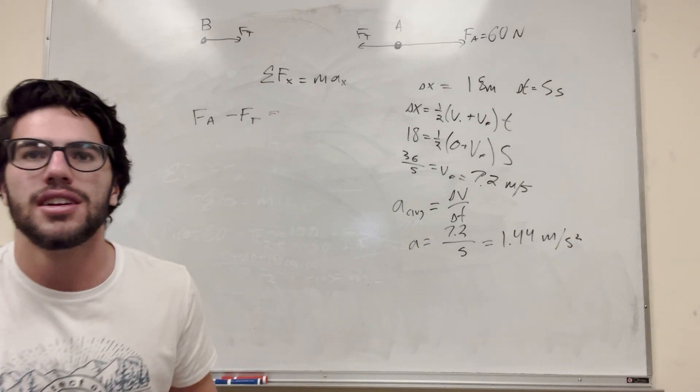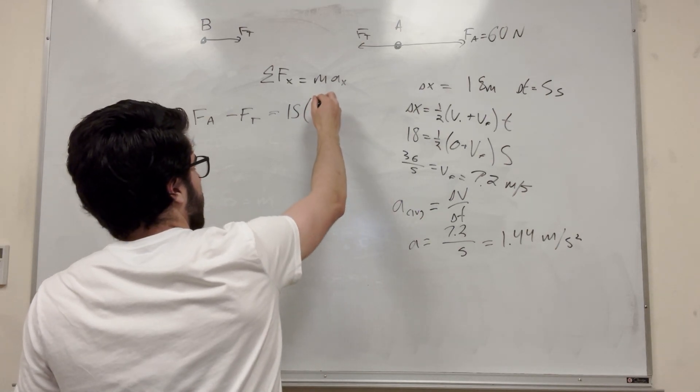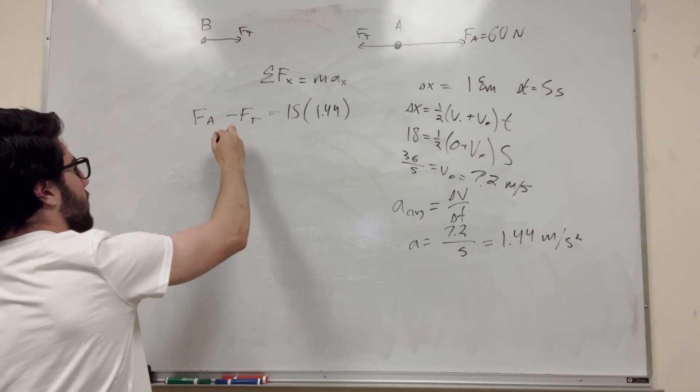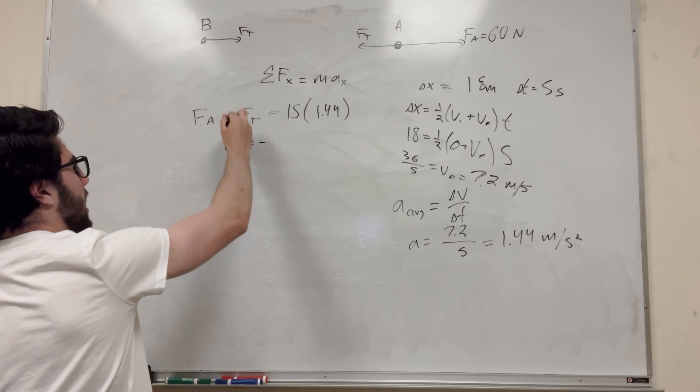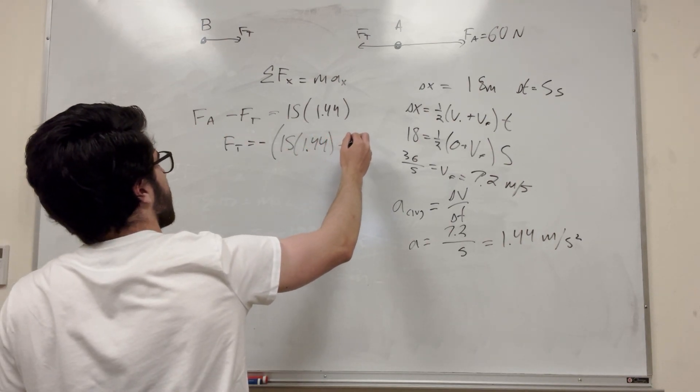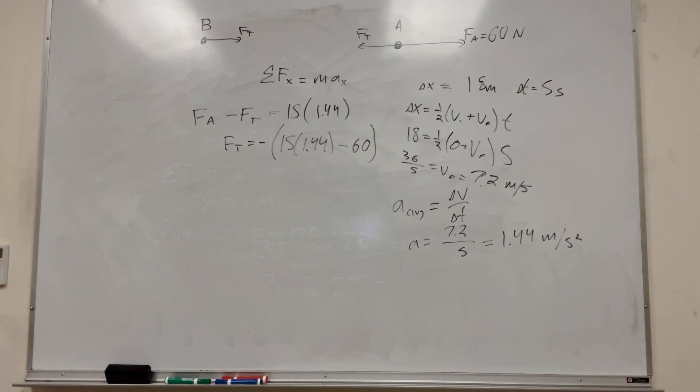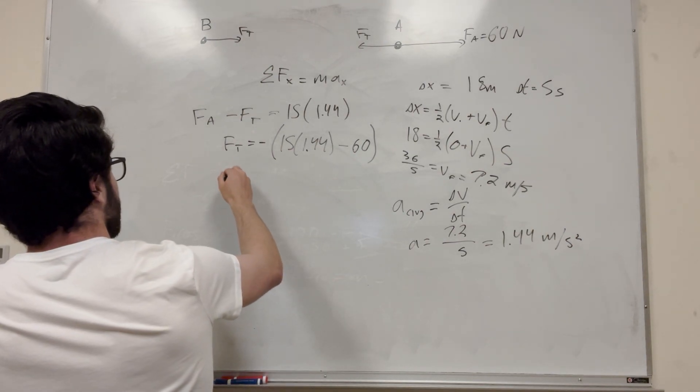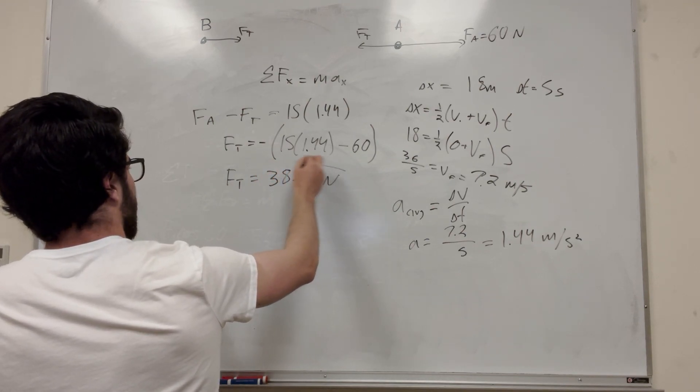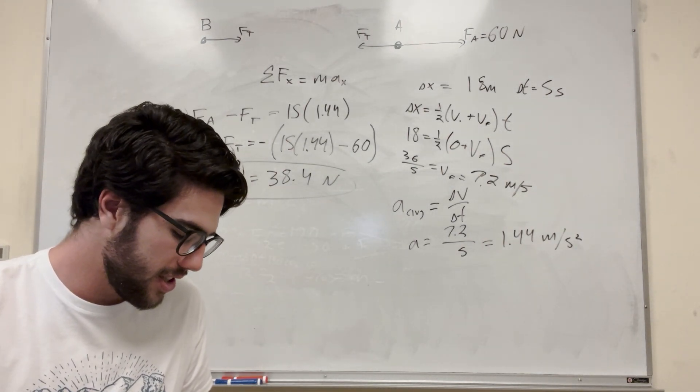And then our mass is 15, and then our acceleration is 1.44. So we're trying to find force of tension, so let's go ahead and subtract this over. So we're going to get force of tension is equal to, we're going to multiply it. So that's going to be 15 times 1.44, and then we're subtracting this force of applied, which is 60 newtons. So you want to just plug all that in, and here you get the force of tension. I think it's going to be a negative number, but we're just looking at the magnitude of it, so 38.4 newtons. That's the force of tension. So that's the magnitude of the force of tension. And so that's part A.